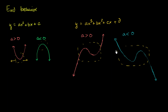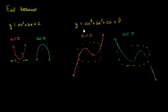The end behavior for a third degree polynomial is that if a is greater than 0, we're starting at really low values, and as x becomes positive, we get to really high values. If a is less than 0, we have the opposite. These are the two prototypes for polynomials, because from there we can start thinking about any degree polynomial.